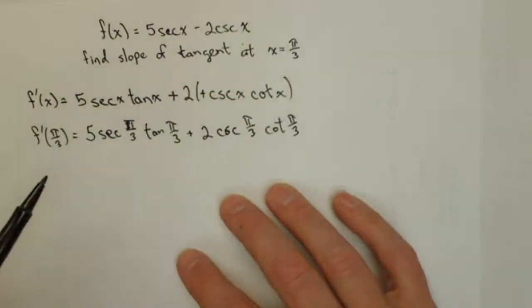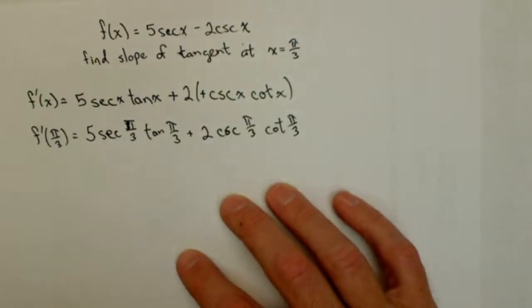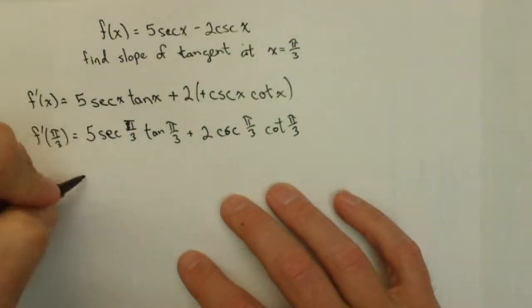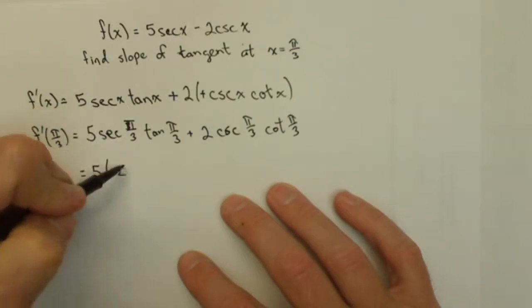As we know, π/3 is one of our special angles where we give exact answers. So 5 times sec(π/3) equals 5 times 2.